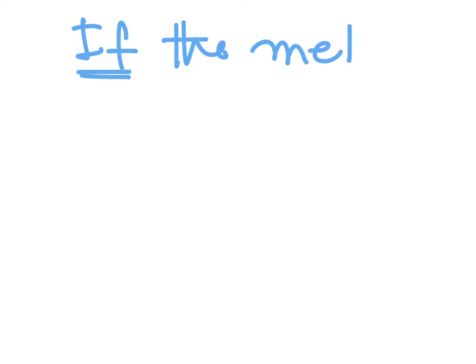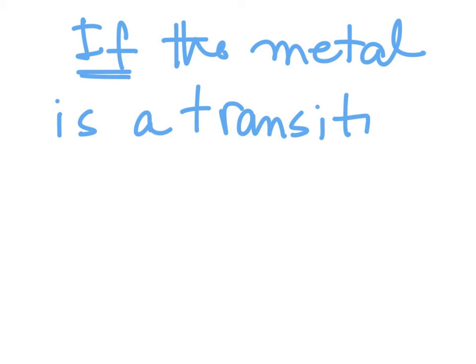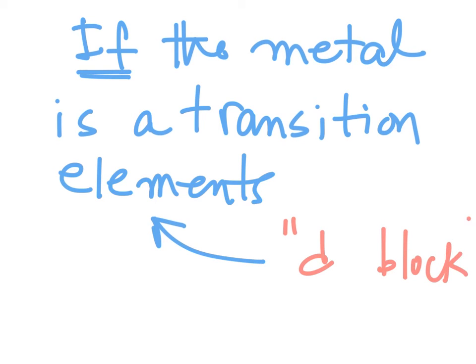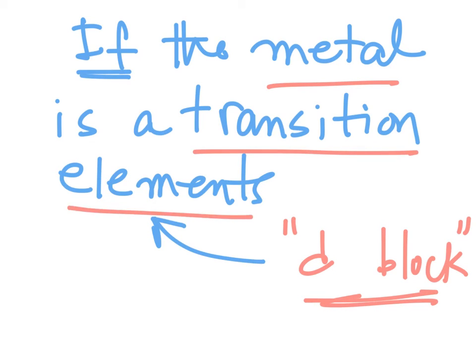There is a small exception. If the metal part of an ionic compound is a transition element — transition elements are elements found in the D block of the periodic table — then we have a different set of rules. Here's an example.